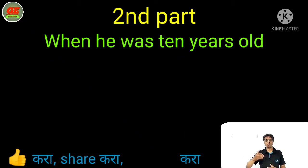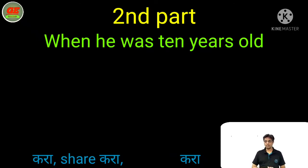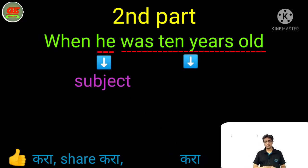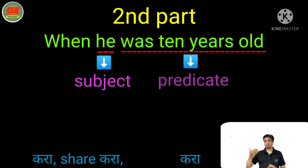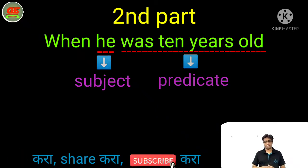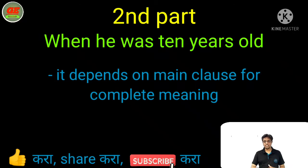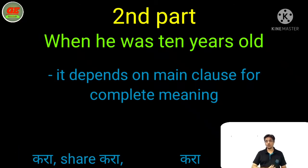Now let's see the second part: 'when he was 10 years old.' In this part, it also has subject and predicate — 'he' is subject and 'was 10 years old' is the predicate. But it depends on the main clause for complete meaning.